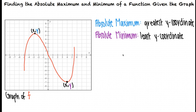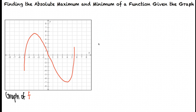Sometimes a graph may not have an absolute maximum or absolute minimum. Shouldn't all graphs have a highest and lowest point? Sometimes a function may continue on forever, implied by arrows at either end of the graph. If the arrow points upward, the y-values get bigger and bigger, approaching positive infinity. In this case there is no absolute maximum because the y-values are continuously increasing without end.